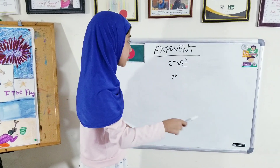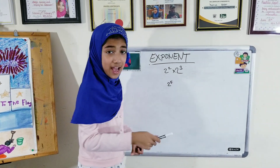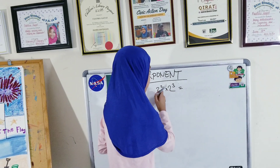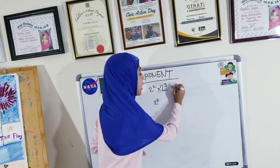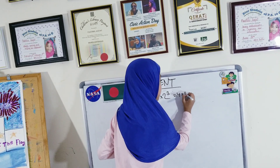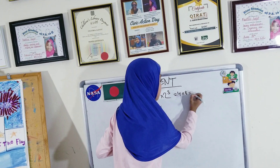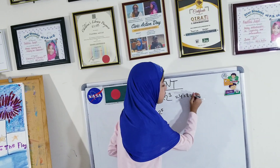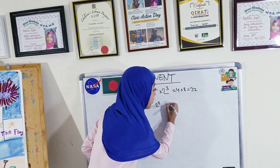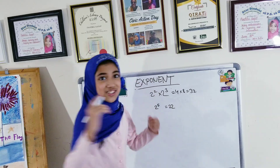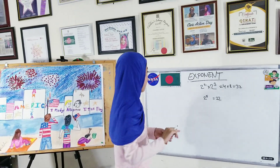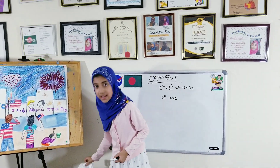I'm also going to prove to you that this is true, because normally 2 to the power of 2 would have been 4, and 2 to the power of 3 would have been 8, which equals 32. And when we do 2 to the power of 5, this is also going to be equal to 32. So this is the proof of the multiplication or the product rule.